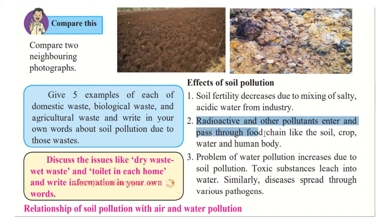Next, radioactive and other pollutants enter and pass through the food chain — from soil to crops to water to the human body. Like atomic research centers that generate radioactive material during research and production, this material goes back into the soil or is consumed by crops and water bodies, and eventually enters our human body.